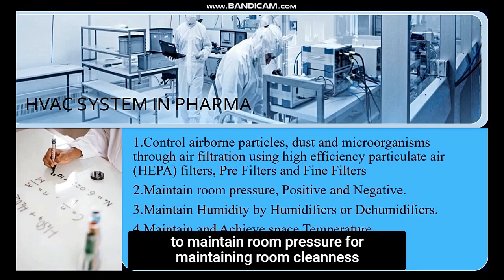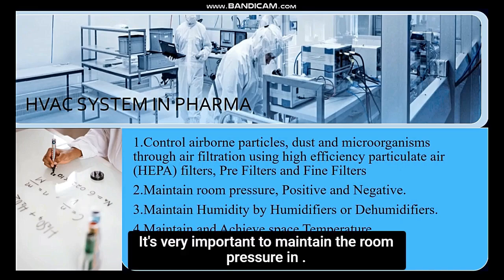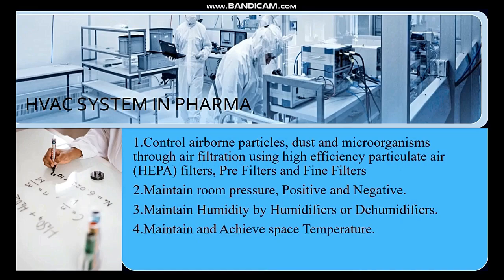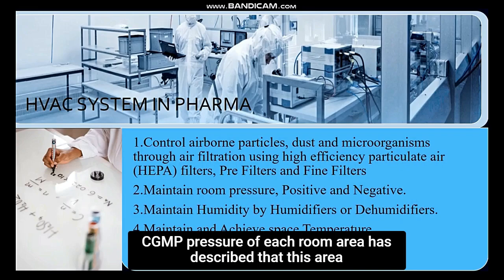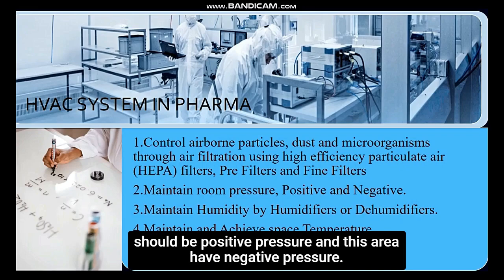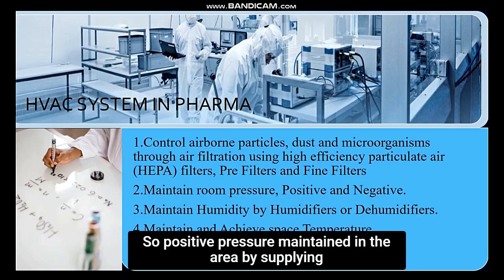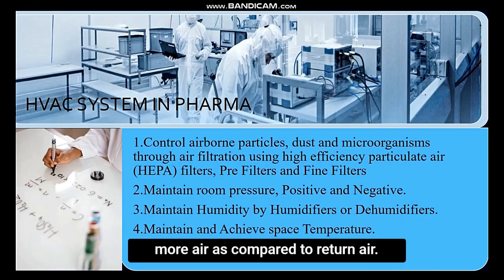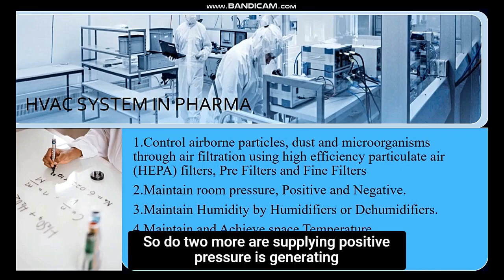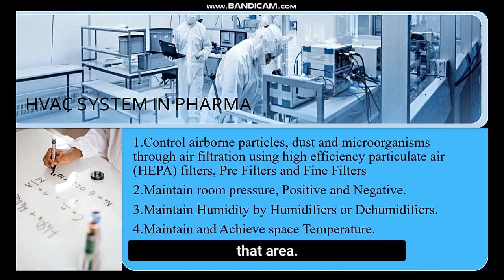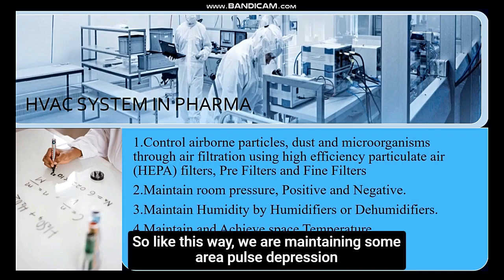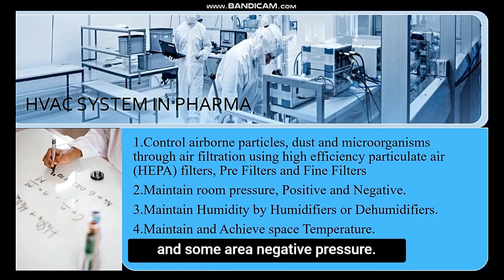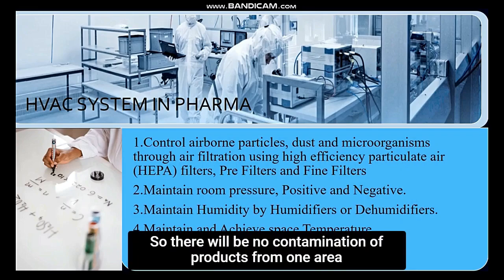The second rule is to maintain room pressure. For maintaining room cleanliness in the production area, it is very important to maintain the room pressure. In CGMP, the pressure of each room area is described — this area should be positive pressure and this area should have negative pressure. Positive pressure is maintained by supplying more air compared to return air. This way we maintain some areas at positive pressure and some at negative pressure, so there will be no contamination of product from one area to another.